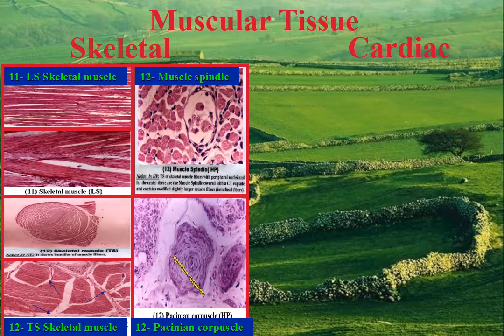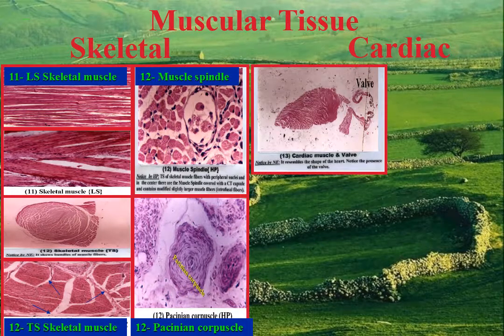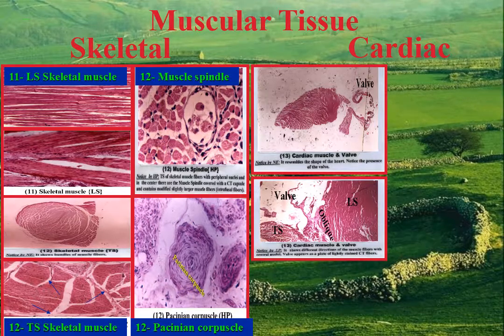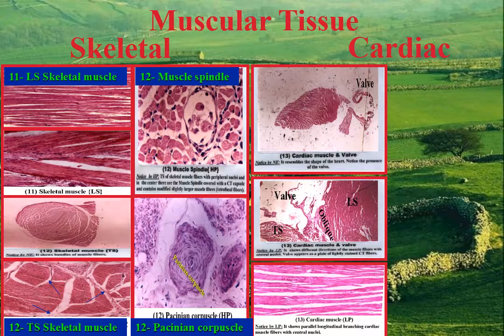Cardiac muscle examples: the section resembles the shape of the heart and the valve appears lightly stained by low power. Cardiac muscle fibers are cut in various directions, and the valve appears as a band of connective tissue. Longitudinal section of cardiac muscle fibers by low power shows branching of the fibers and the presence of central nuclei.